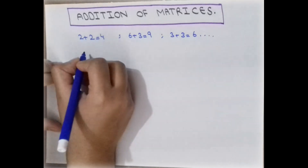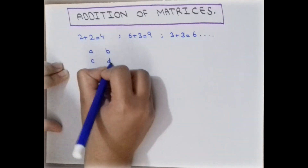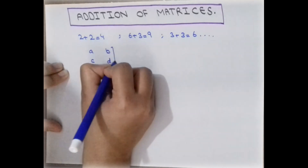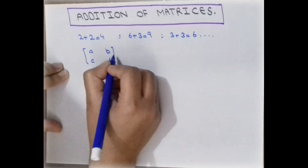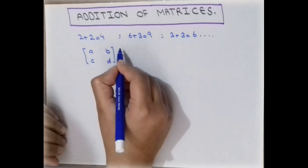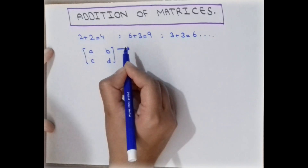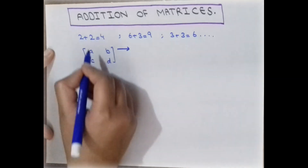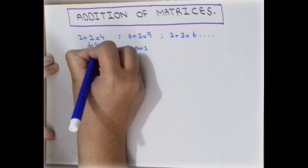Basically, a matrix is a rectangular array of numbers enclosed in square brackets. It has rows arranged horizontally and columns arranged vertically.